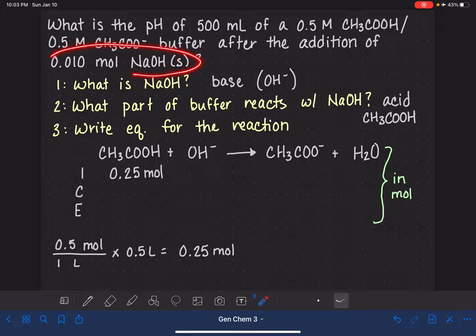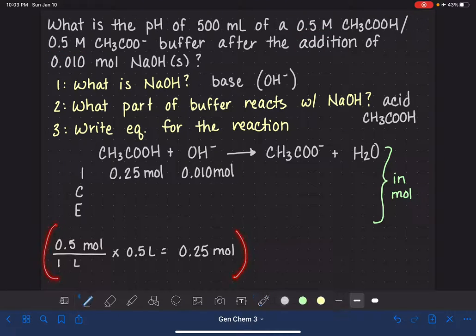We calculated that from the volume and the molarity. The amount of NaOH that we are adding is 0.01 moles. We also have some initial CH3COO minus. Fortunately, it's the exact same molarity as our acid. So the calculation that we've already done will work for giving us the number of moles of the base.